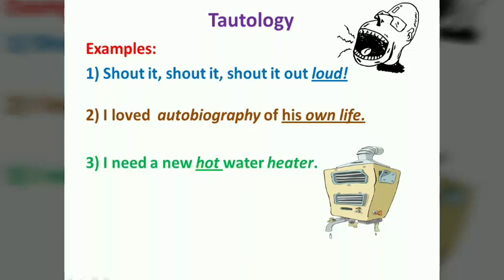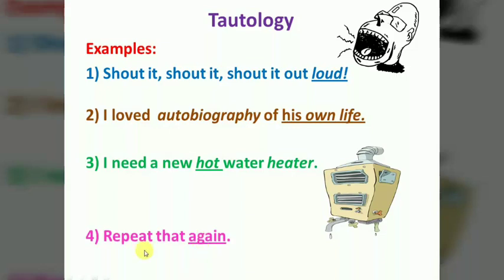Tautology का इस्तेमाल होता है। आगे बढ़ते हैं — 'repeat that again.' अब 'repeat' करना मतलब बार-बार दोहराना, और 'again' यानी फिर से। यानी एक ही meaning को अलग-अलग शब्दों में सामने रखा गया है — इसलिए यहाँ Tautology है।